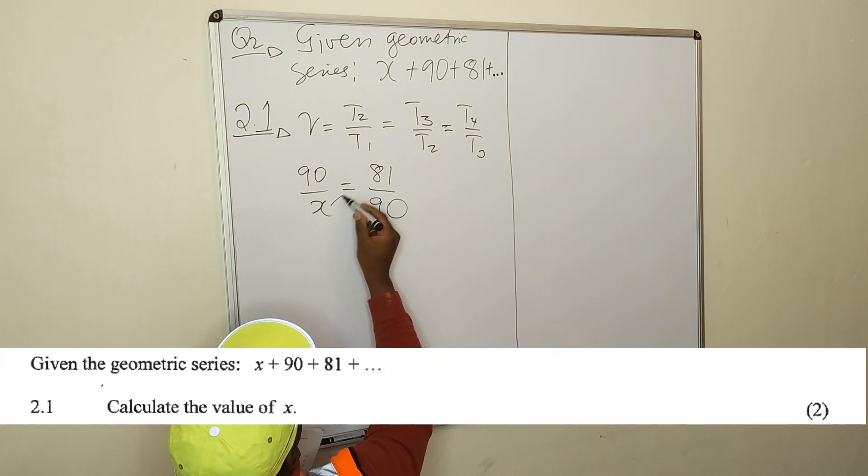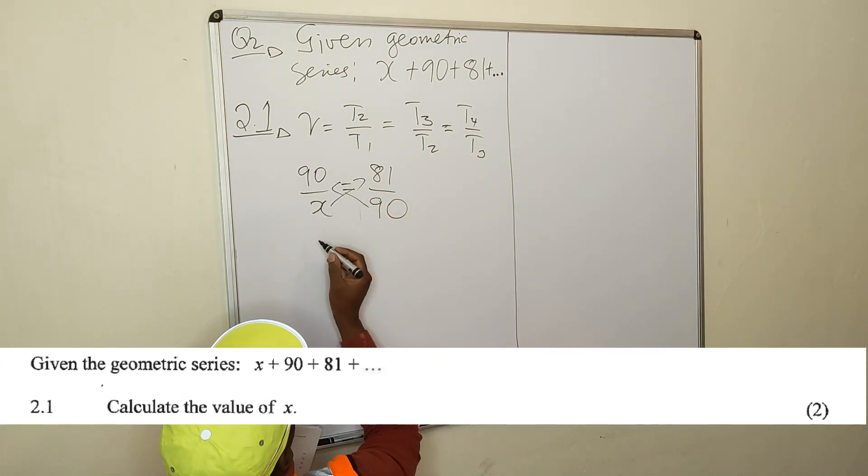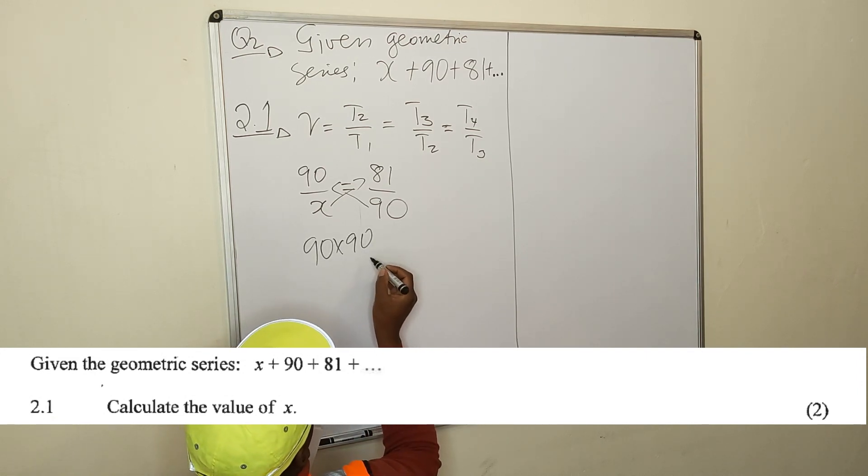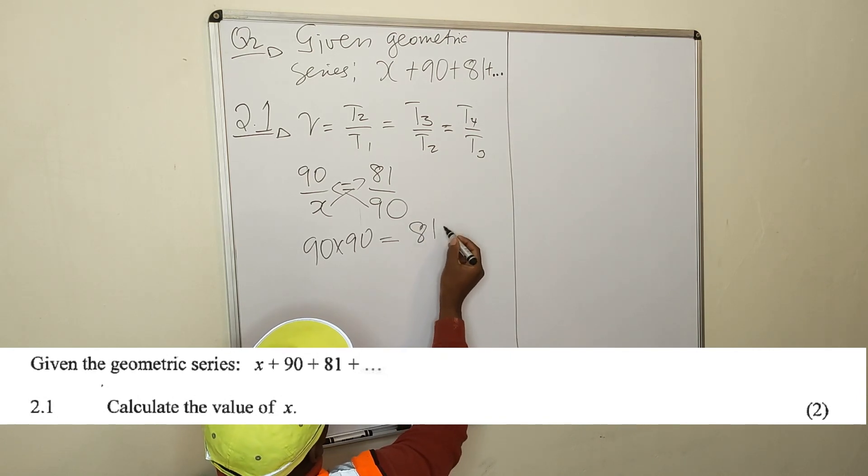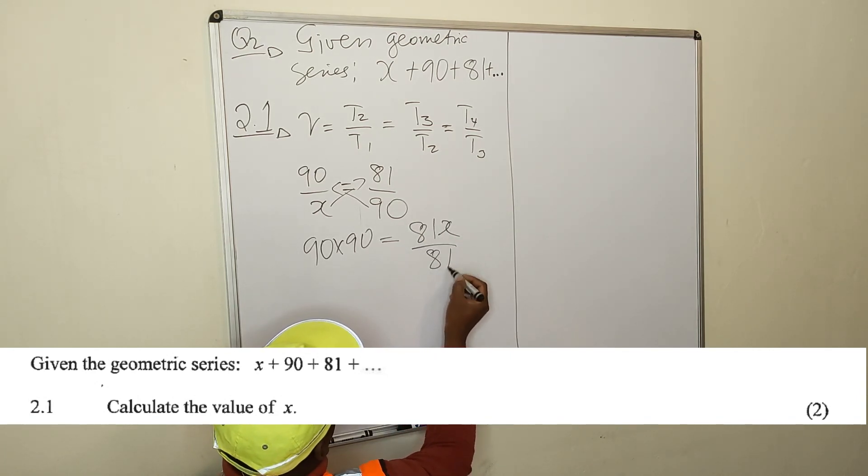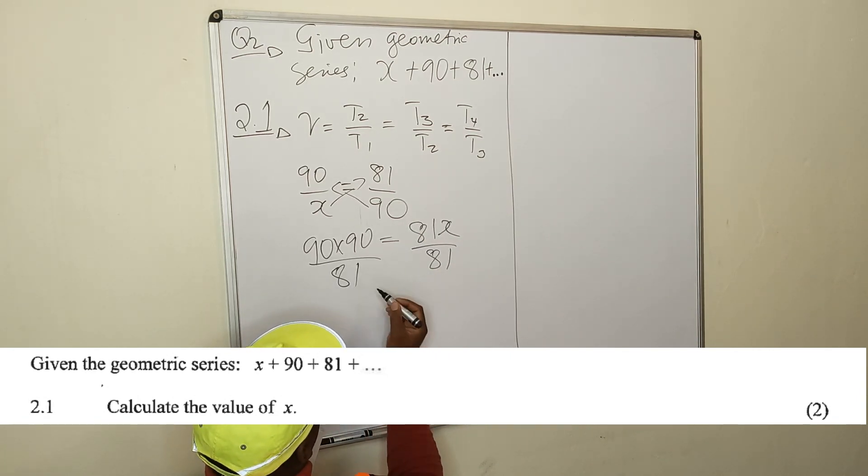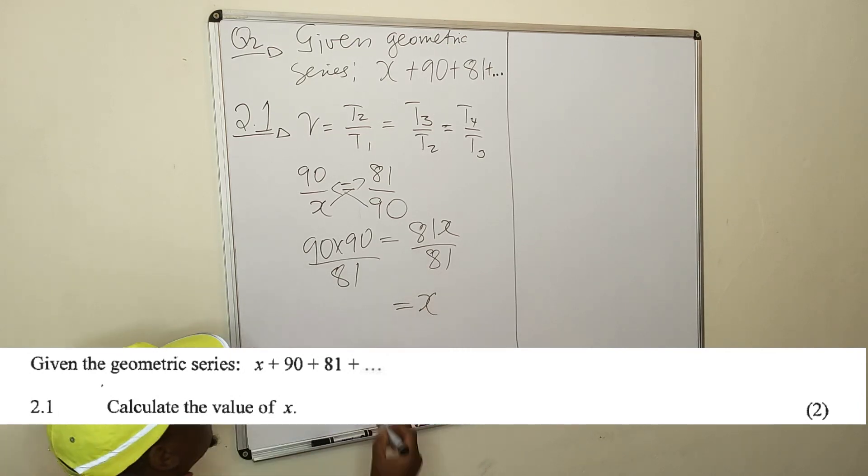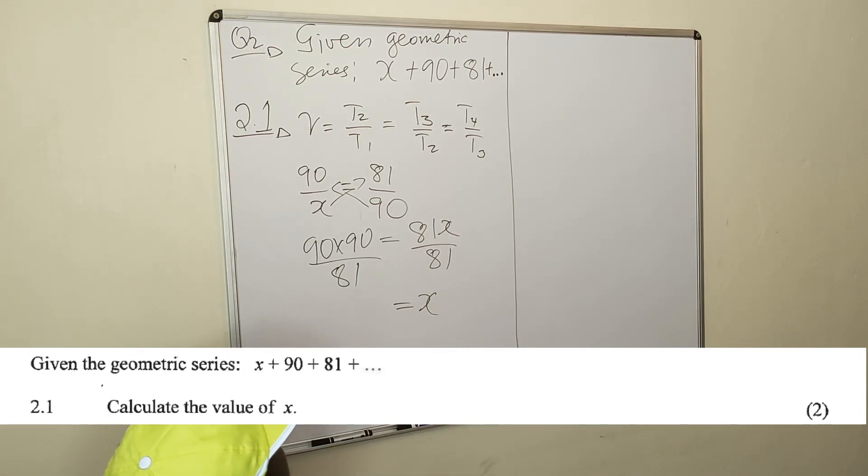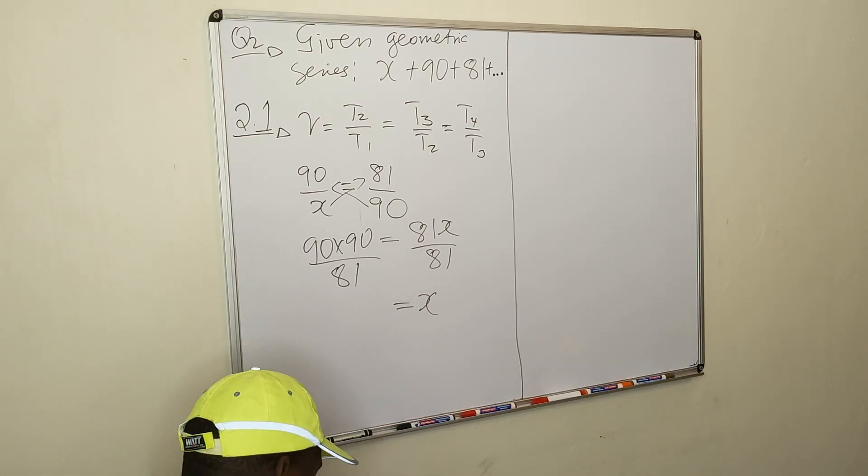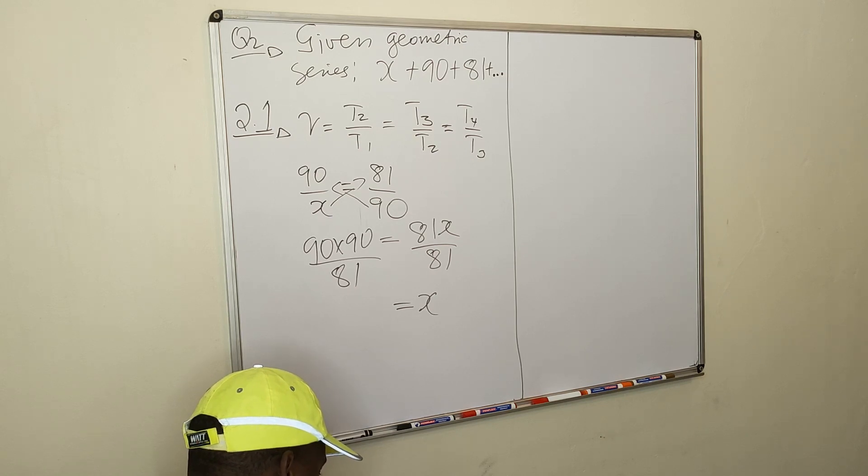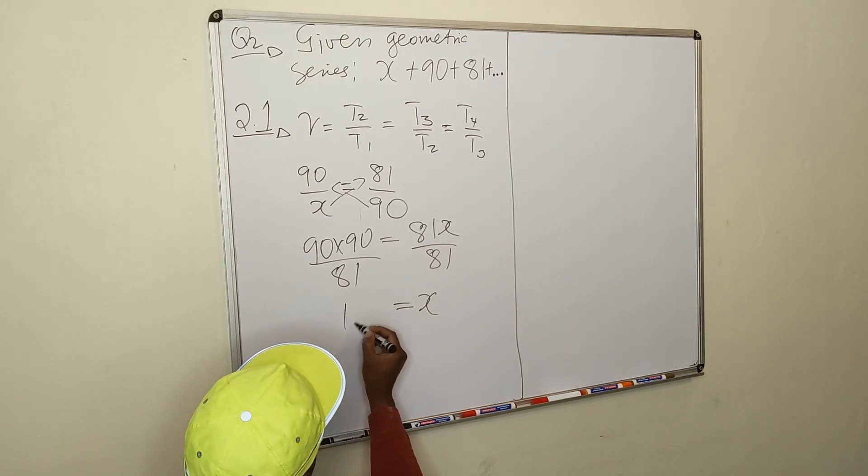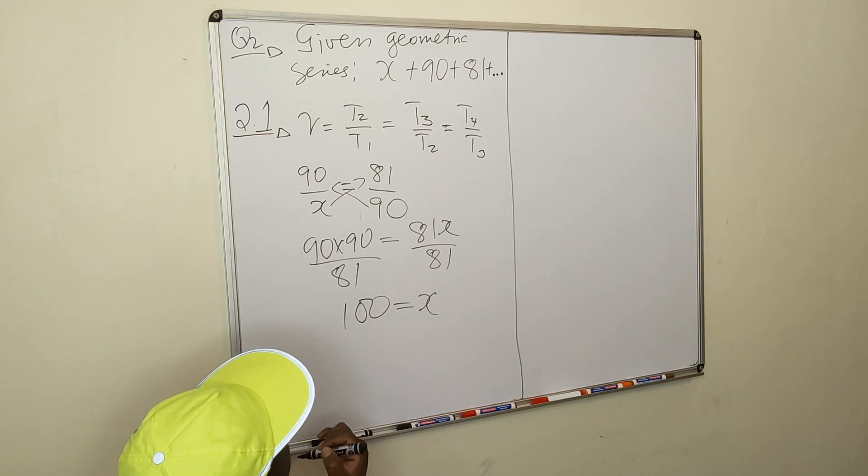You cross multiply, this times that, this times that. So you have 90 times 90 equal to 81x. Divided by 81, divided by 81. So 90 times 90 divided by 81. So the answer is 100.